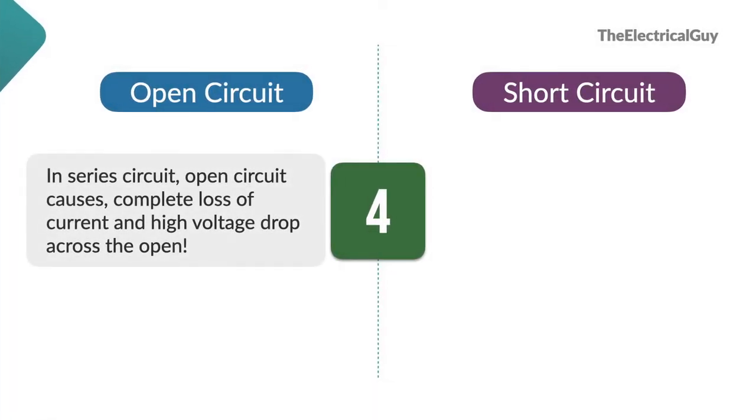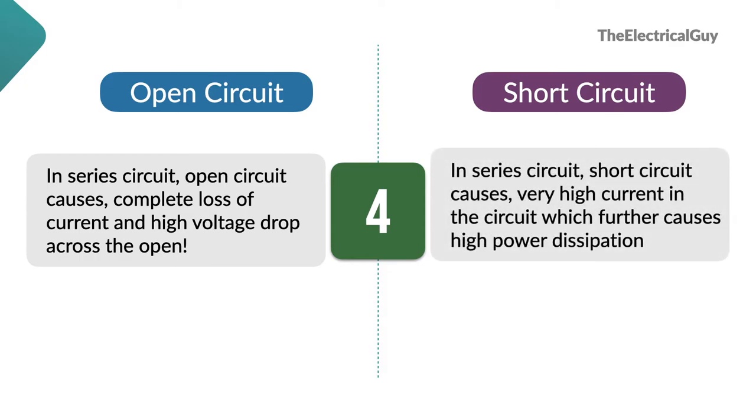So our fourth point would be, in series circuit, open circuit causes complete loss of current and high voltage drop across the open, whereas short circuit causes very high current in the circuit which further causes high power dissipation across the components.